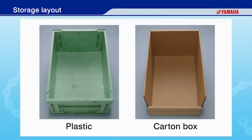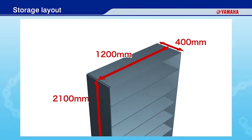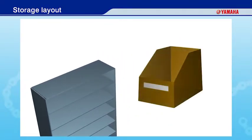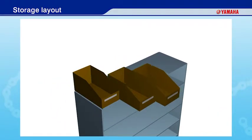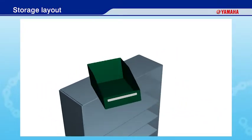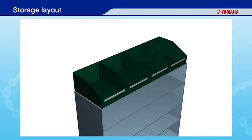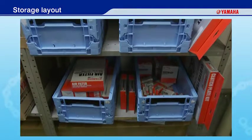Bins are typically made of plastic or cardboard. For example, consider a six-shelf rack that is 1,200 mm wide, 400 mm deep, and 2,100 mm high. If your small bins are 200 mm wide and 400 mm deep, you can place six bins on a single shelf. If your medium bins are 300 mm wide and 400 mm deep, you can place four bins on a single shelf. If your bins do not fit neatly in your racks, your parts storage will be a mess.